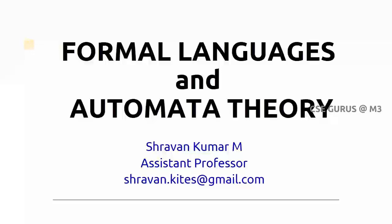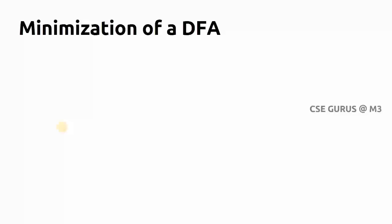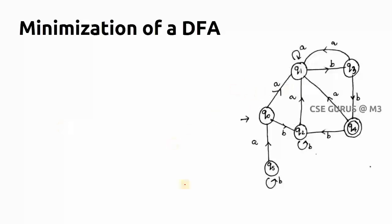Welcome to the class of Formal Language and Automata Theory. Today we cover the concept of minimization of DFA. Minimization means we reduce the number of states so that the resultant finite automaton accepts the same strings as the source DFA and rejects the same strings as well.